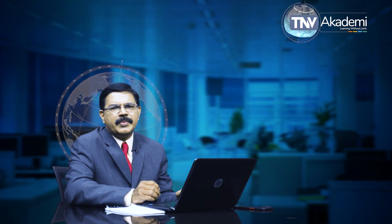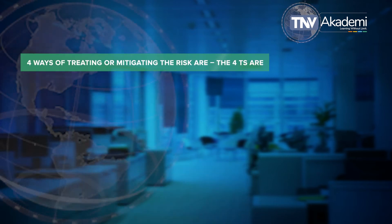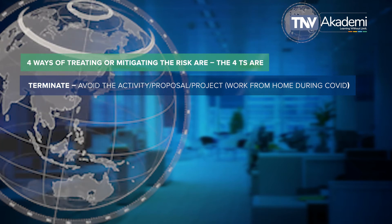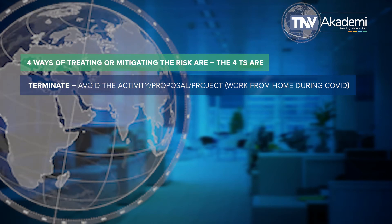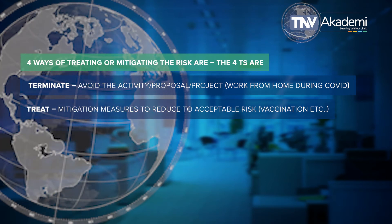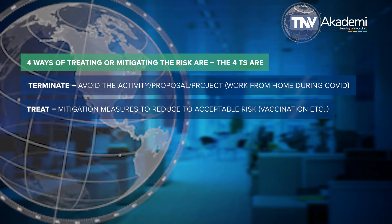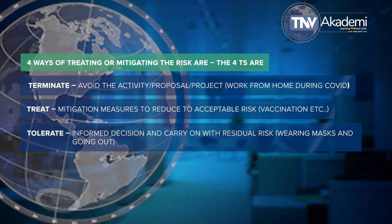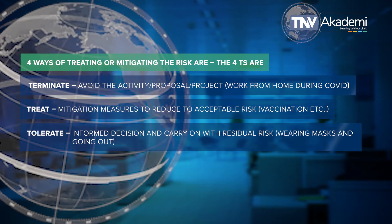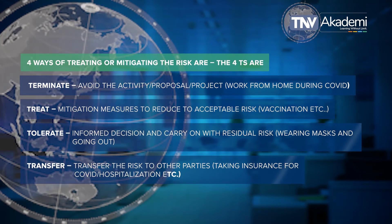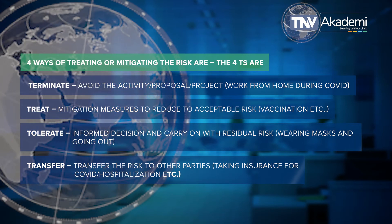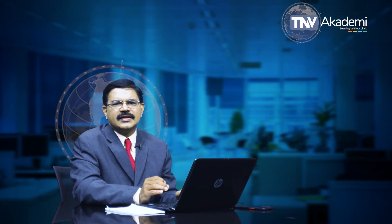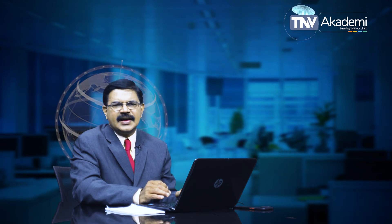Four ways of treating or mitigating risks are called the four T's. One: Terminate — avoid the activity entirely, like working from home during the COVID pandemic so we never got infected. Two: Treat the risk — take mitigation measures to reduce the risk to acceptable levels, like vaccination. Three: Tolerate the risk — make an informed decision and carry on with residual risk, like wearing a mask and going out to conduct business. Four: Transfer the risk — transfer it to other parties like insurance companies, such as taking COVID hospitalization insurance. Every process should evaluate risks on severity and probability and prioritize actions for significant risk.